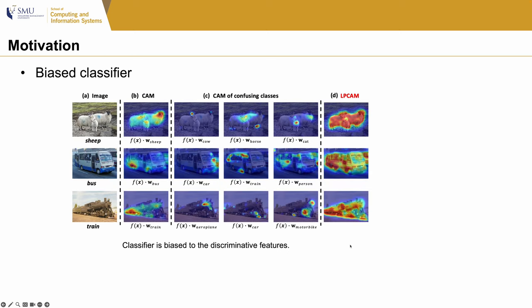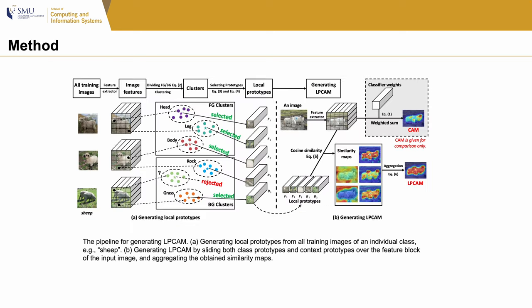However, we find that the classifier is biased to discriminative features. As shown in the figure, the first column is the input image, the second is the CAM, and the following three columns are CAMs of confusing classes — meaning we use the classifier weights of those confusing classes to compute a CAM. We find that the CAMs of the ground truth class and the confusing classes are complementary. For example, the front and upper regions activated in the CAMs of 'car' and 'train' are missing in the CAM of 'bus,' because the classifier deactivates those regions for bus as they are likely to be recognized as car or train. The question is then how to derive a non-biased classifier that produces CAMs with better coverage on the object.